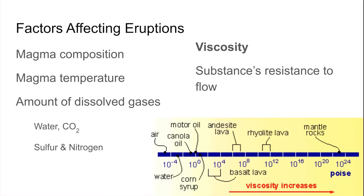A big way to affect viscosity in liquids is to decrease it by increasing the temperature. So if you're trying to use honey in a recipe, it's a good idea to submerge your honey jar in a pot of hot water — it'll make it a lot easier to flow.